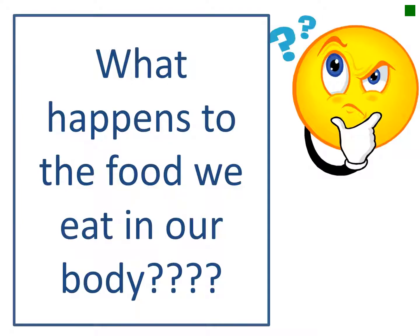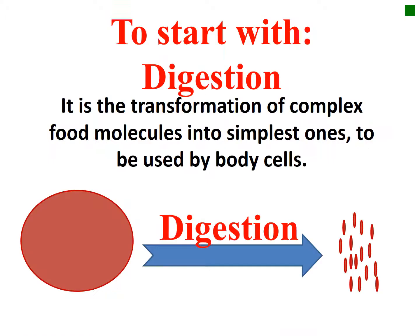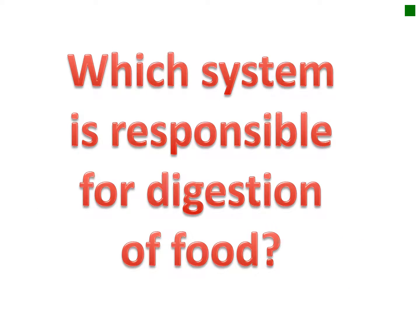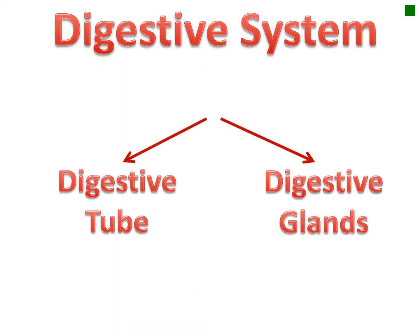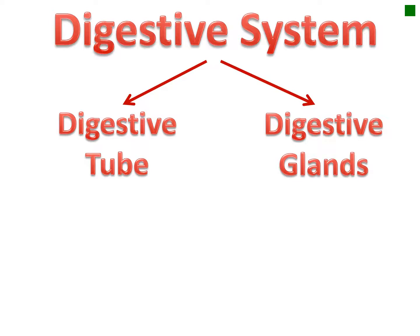Chapter 1, Activity 1: Our Food. All of you love food. What happens to the food we eat in our body? To start with, a simple definition of digestion is the transformation of complex food molecules into smaller ones to be used by the body. Which system is responsible for the digestion of food? It is the digestive system.